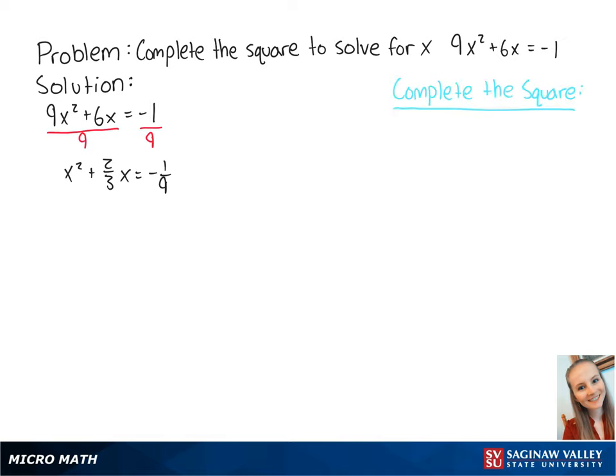To complete the square, we take the coefficient of x and multiply it by 1 half. So we get 2 thirds times 1 half equals 1 third. Then we take 1 third and we square it, which is equal to 1 ninth.